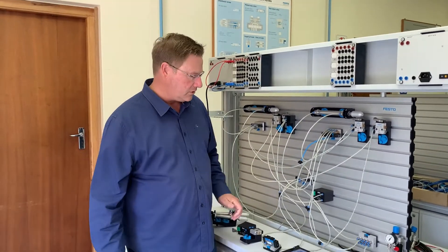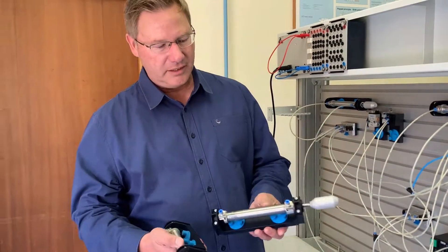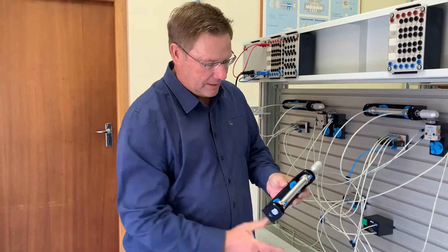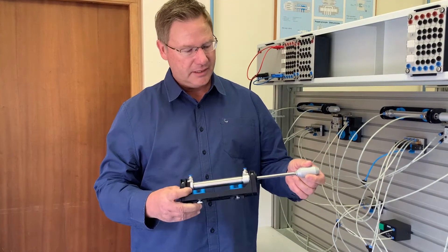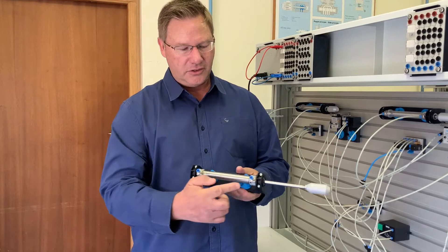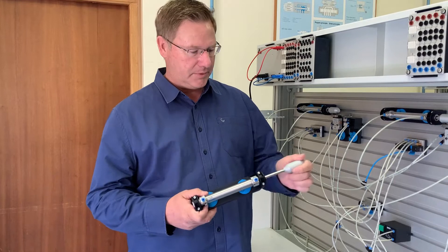Before we get to that I'll just show you some of the components. First of all, your pneumatic cylinders. Here we have a double acting cylinder as you can see. A significant thing about that is you've got two connection points for your air and wherever it moves to it will stay in that position.